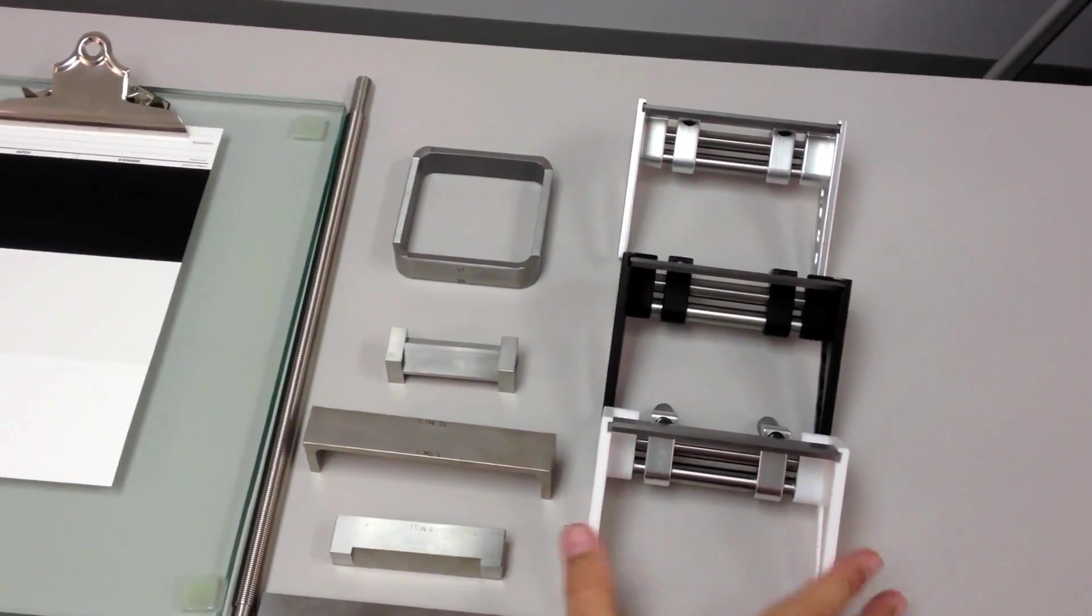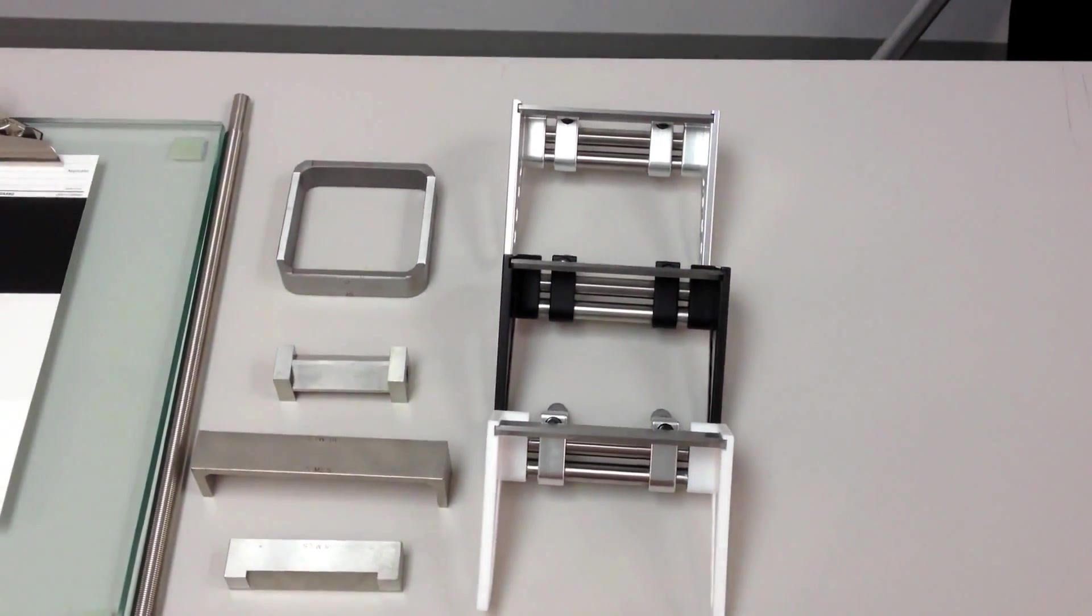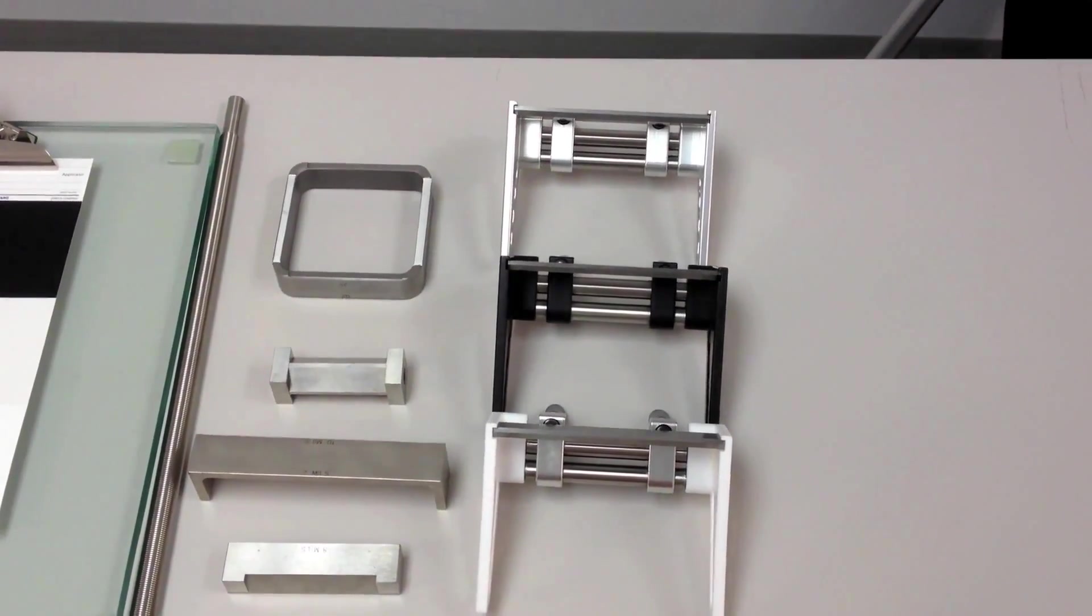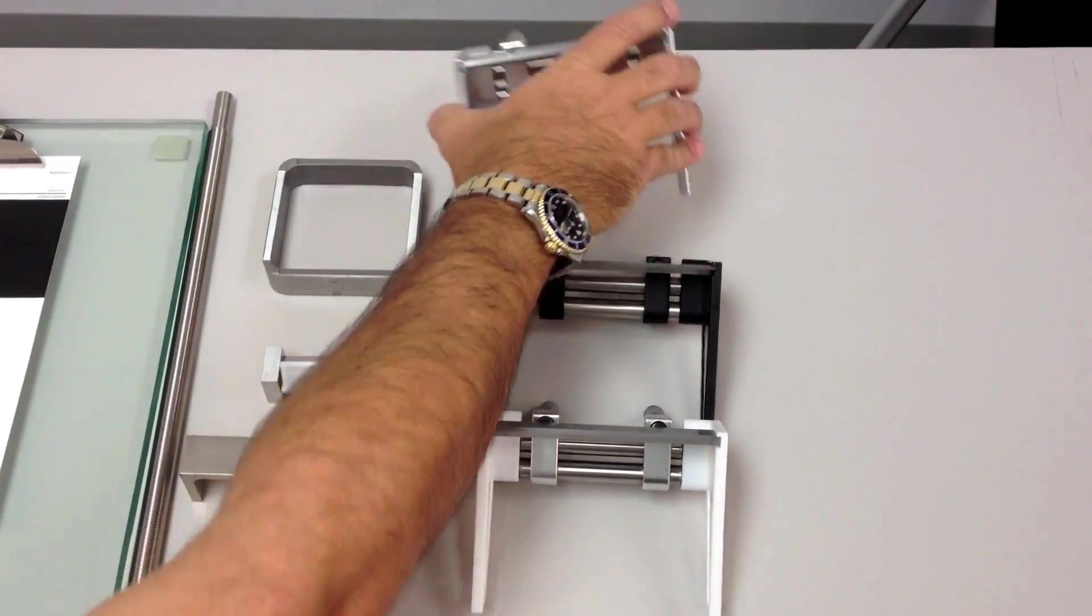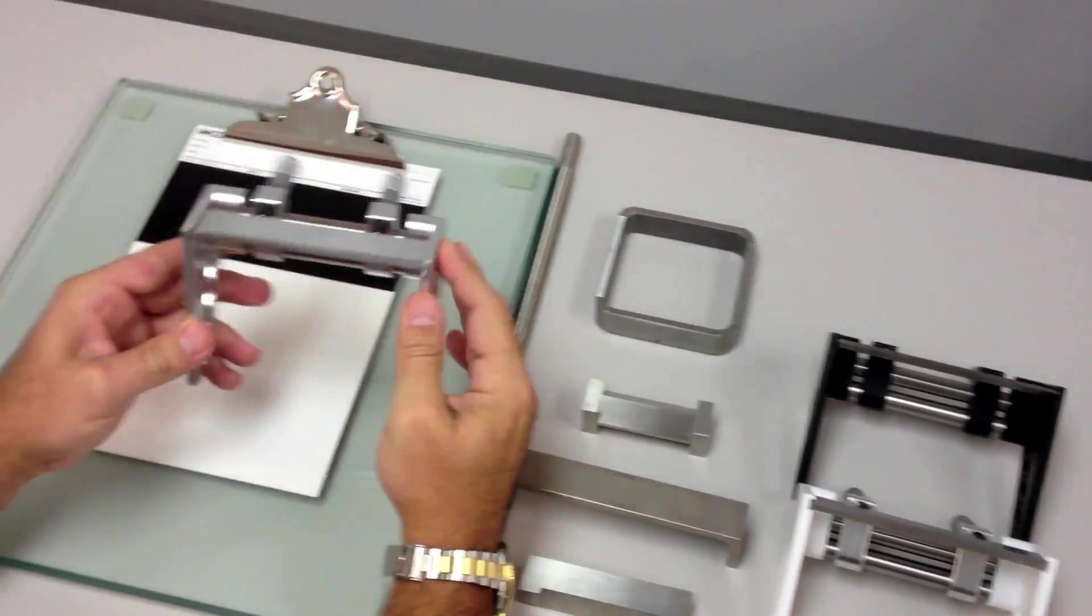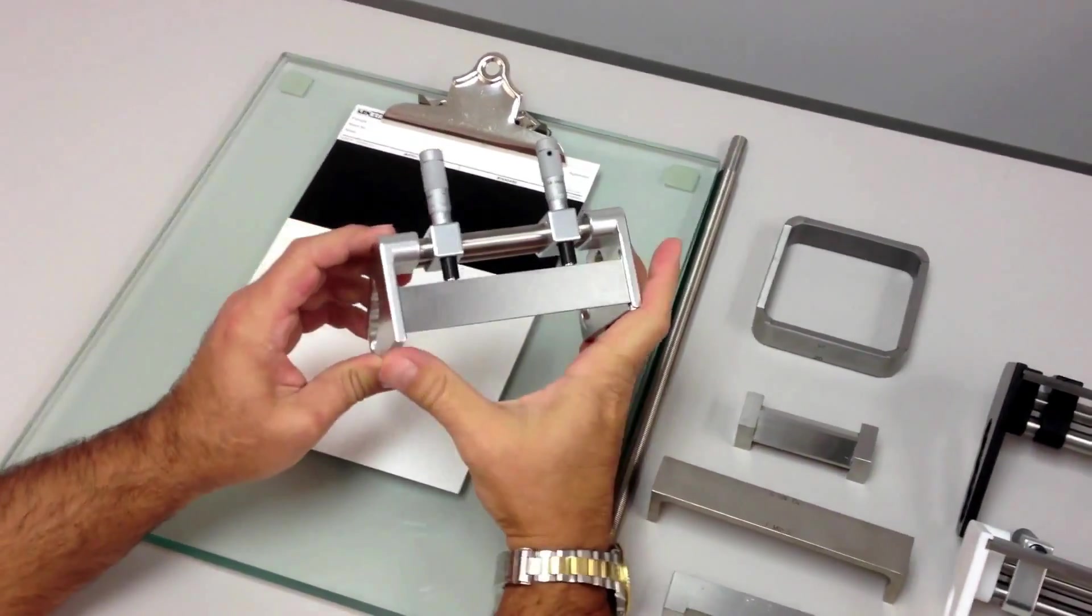Another type of applicator that is offered for wet film is the Micron film applicator. What makes the Micron film applicator unique is that it's a multi-gap applicator.